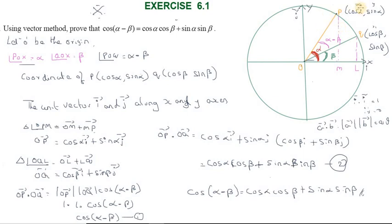Let me explain once again. Point P has coordinates (cos α, sin α) and point Q has coordinates (cos β, sin β). The angle that OP makes with the x-axis is α, and the angle that OQ makes with the x-axis is β. Therefore the angle POQ is α minus β.